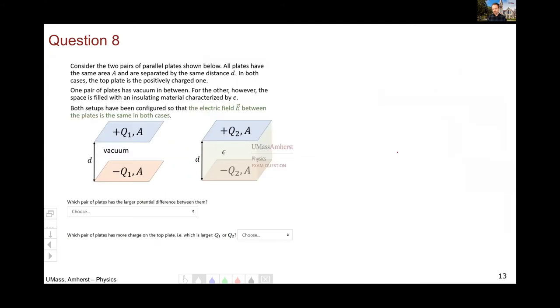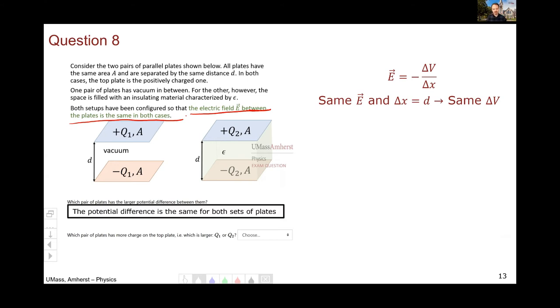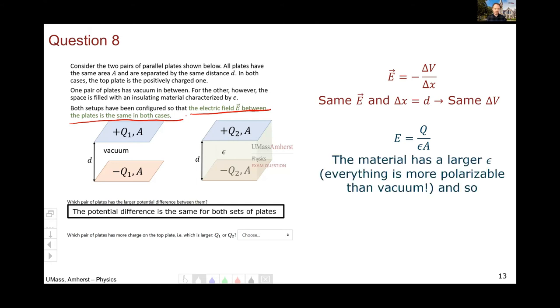Question eight is where things started to get a little bit more challenging for a lot of folk. So here we have our two capacitors. Now that you've talked about unit four, you can recognize these as capacitors. Which pair of parallel plates has the larger potential difference between them? Well, this would think about the relationship between the electric field and the electric potential. I'm going to begin there because I know that the electric field between the plates is the same in both cases. And the distance is the same. The separation between the plates is D in both cases. So they have the same potential difference.